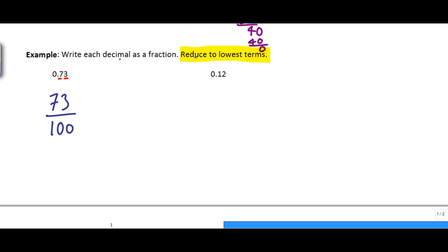Now we have to check to see if we can reduce this to lowest terms. And by lowest terms, we want to simplify our fraction. This fraction can't be simplified because 73 and 100 don't have any common factors that we can get rid of.